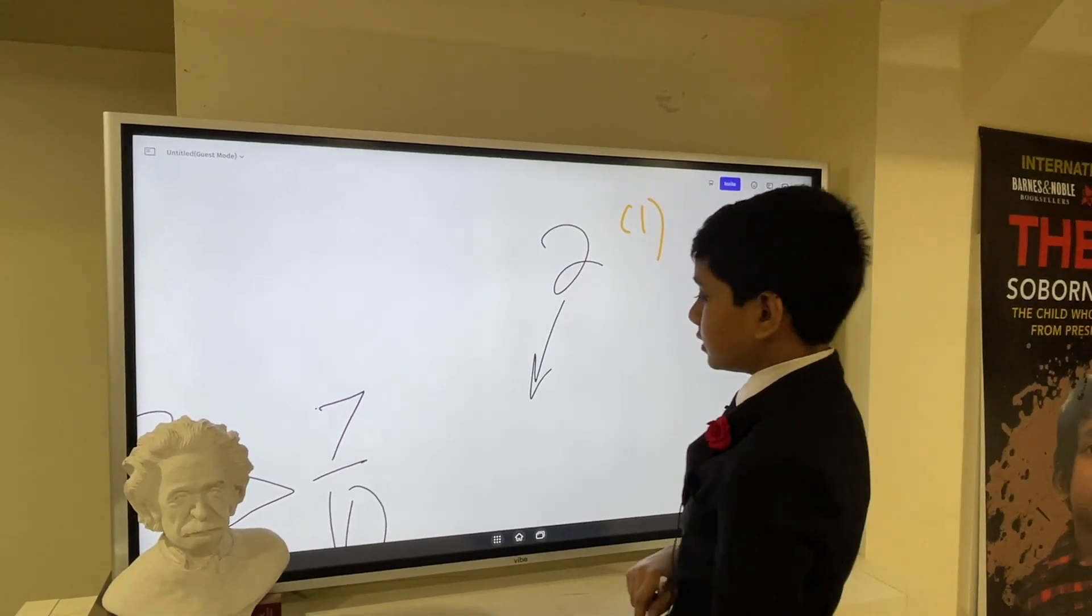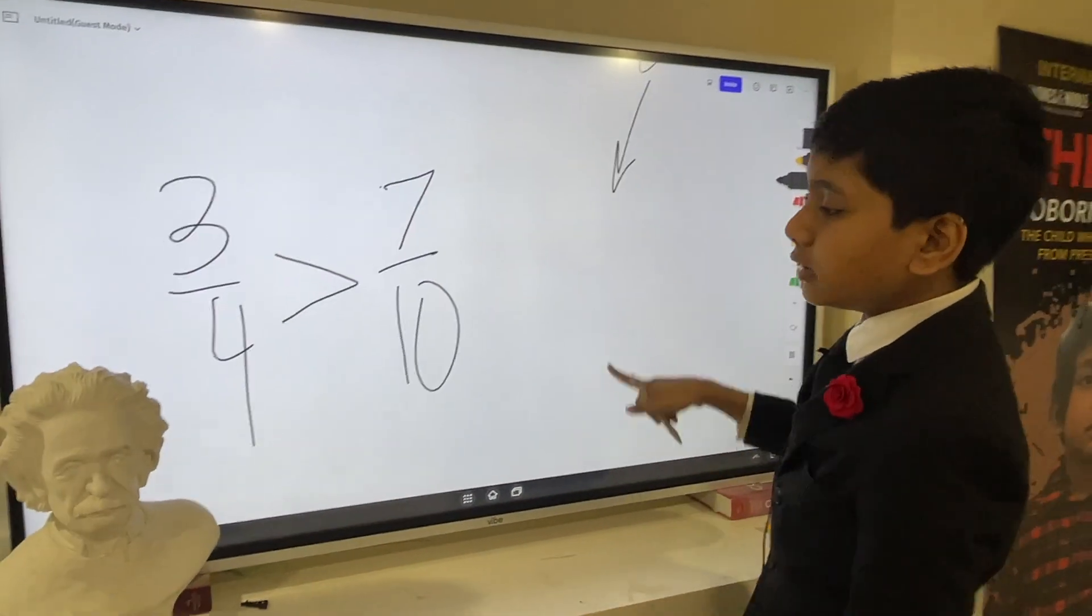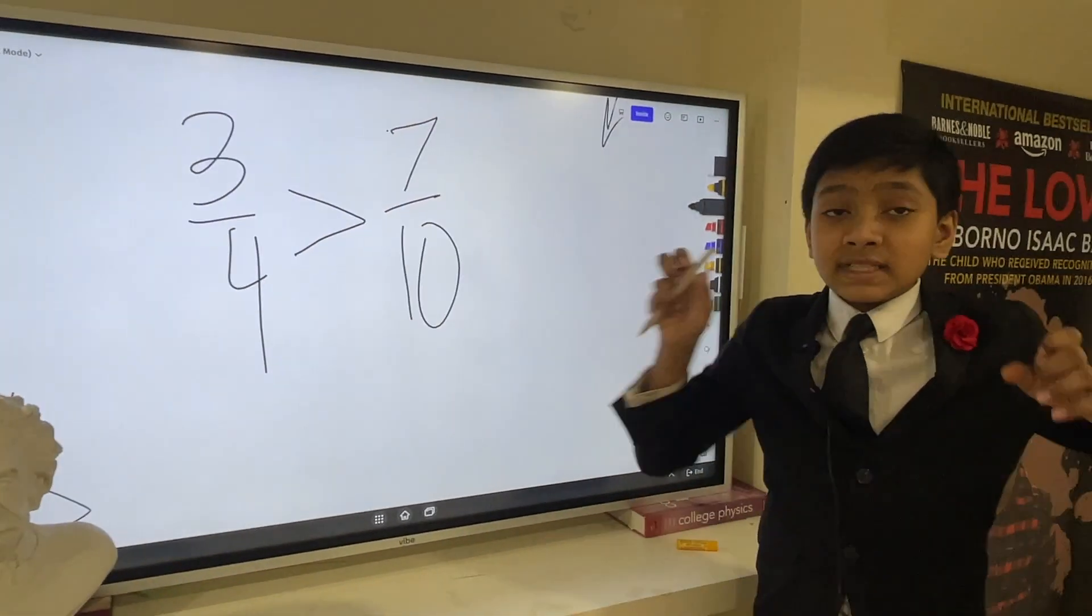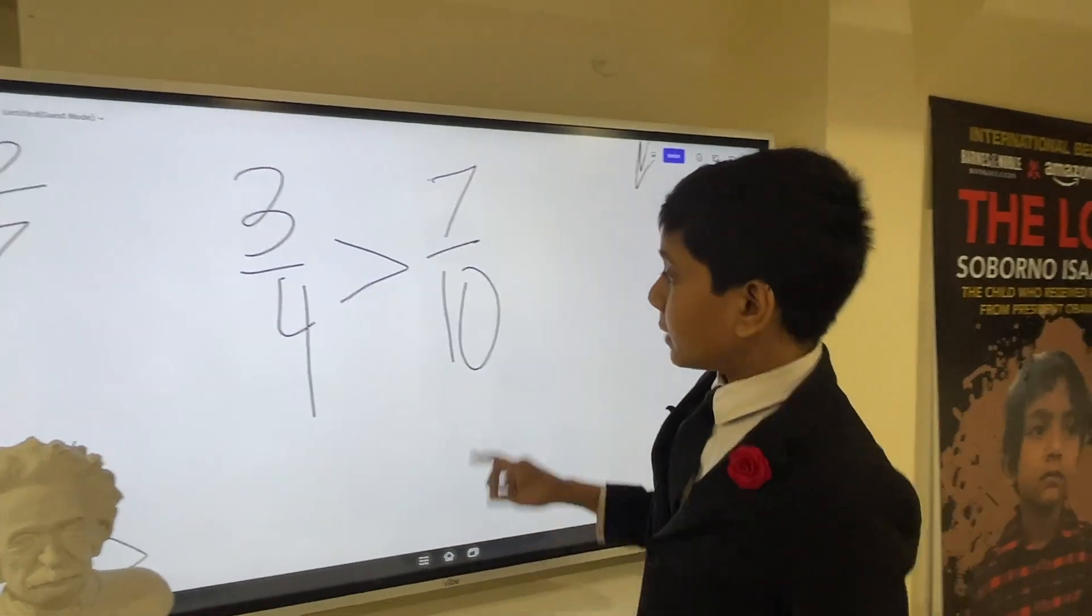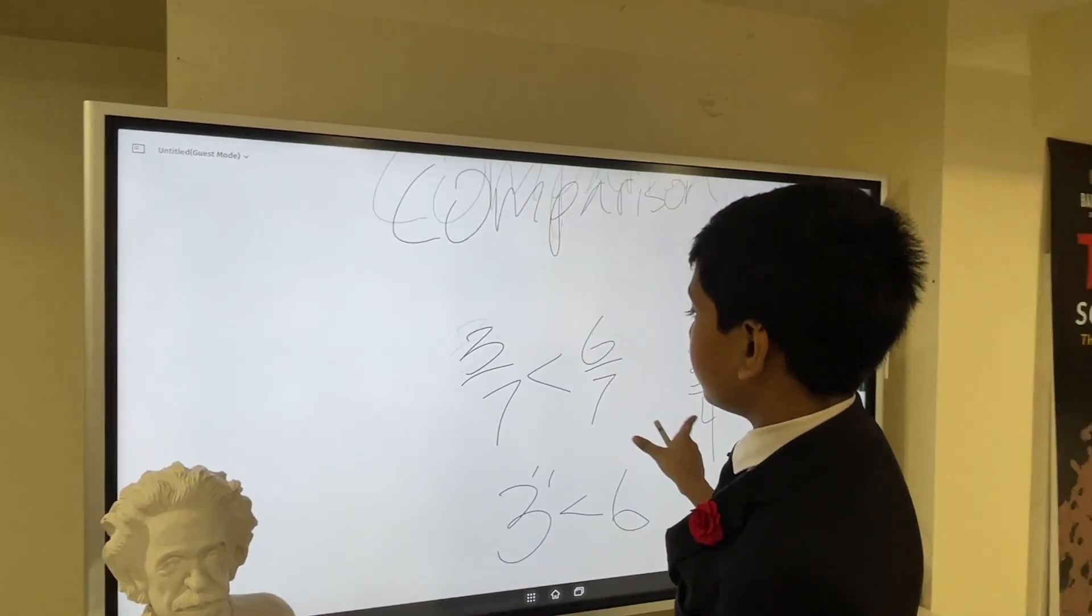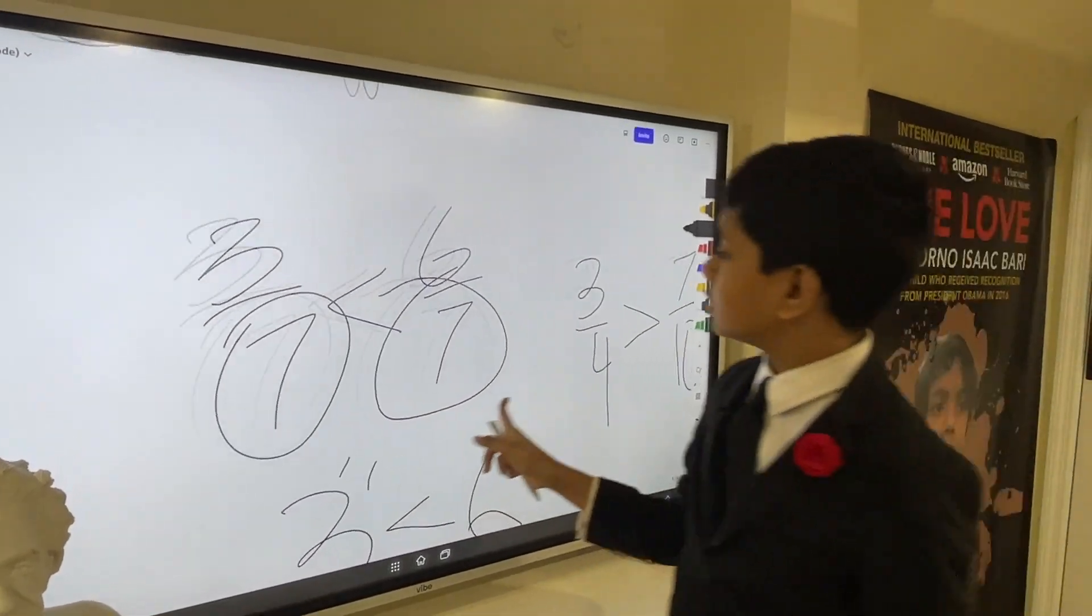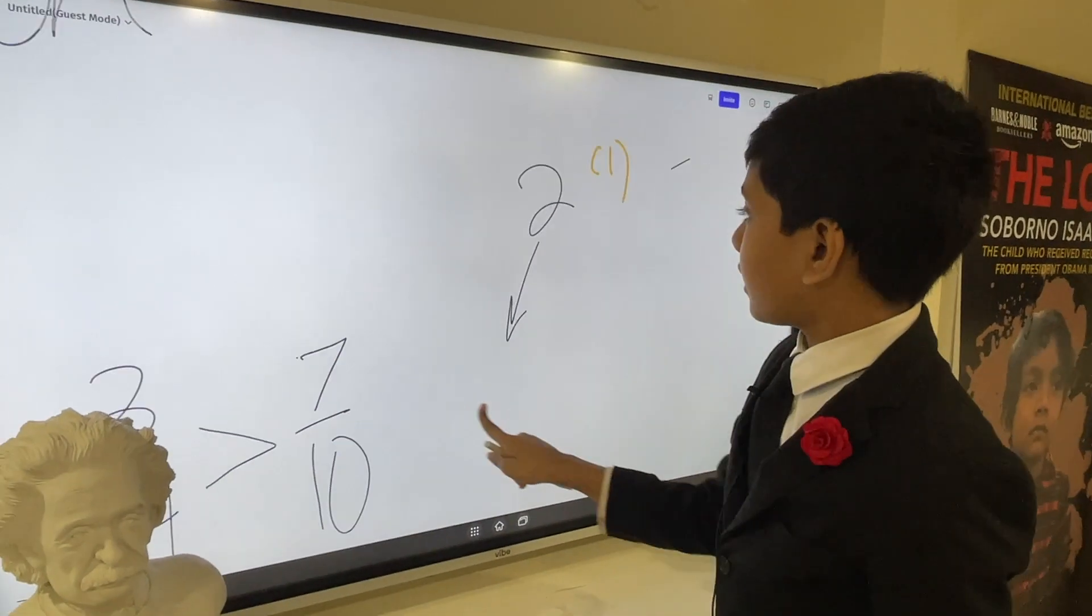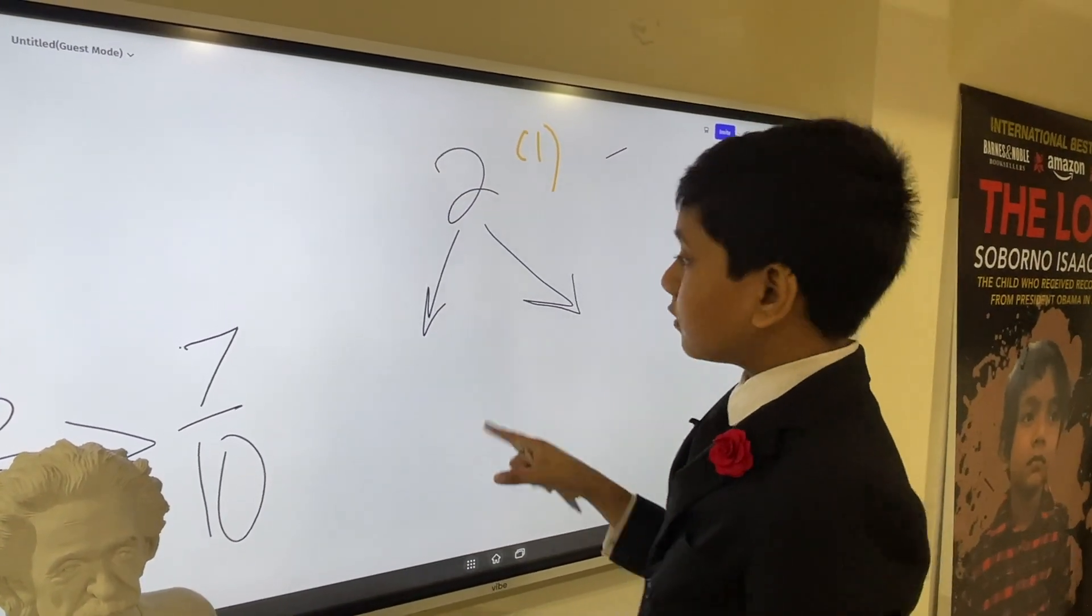First of all, you can just do it by multiplying them. What we want to do here is get their least common denominator. Why? Because if they have common denominators, they're easy to compare, as we saw over here.